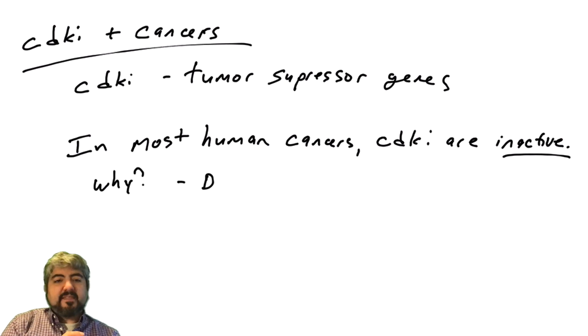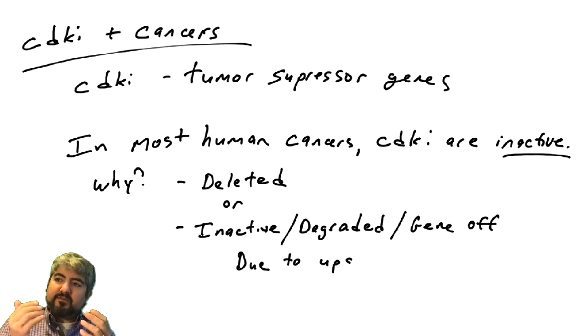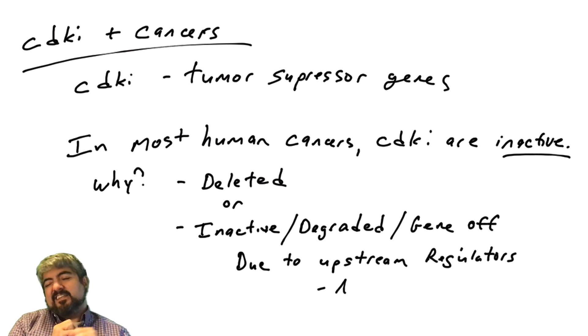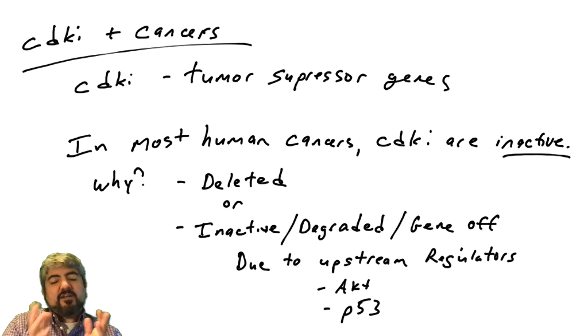So we can think about it. Well, in some human cancers, they're deleted. So you can have mutations within the CDK inhibitor genes. Actually, that's not very common. What's more common are the pathways that regulate CDK inhibitors, they're mutated.